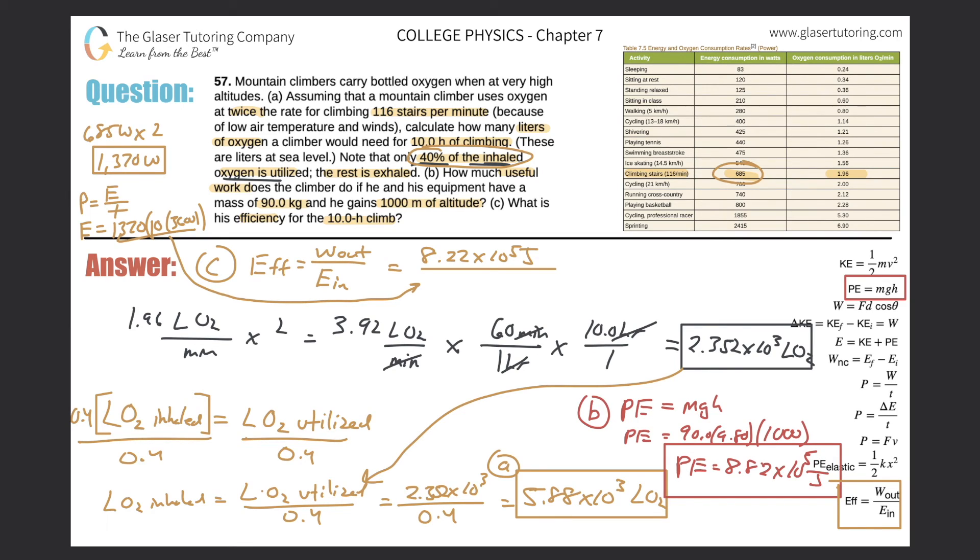And this should make sense - efficiency has to have the smaller number over the larger number, the efficiency cannot be over one. So now just do the division: 8.22 times 10 to the 5 divided by 4.93 times 10 to the 7, and we get an efficiency of 0.017, or really just 1.7% if I convert that into percent - a very small efficiency.